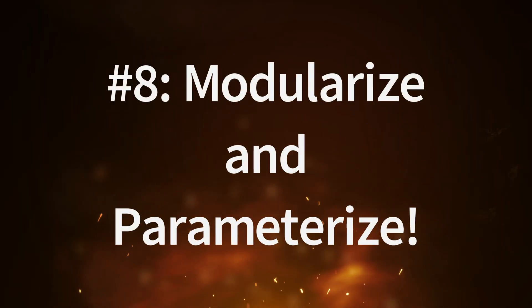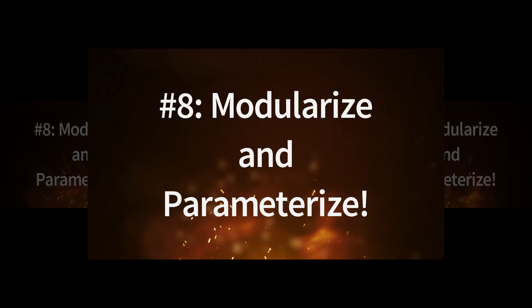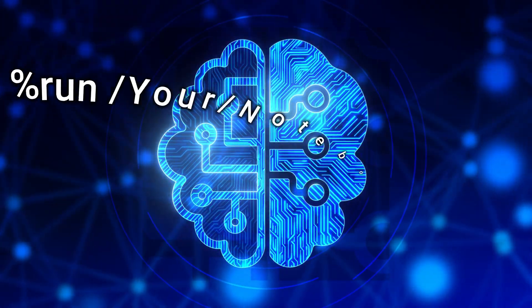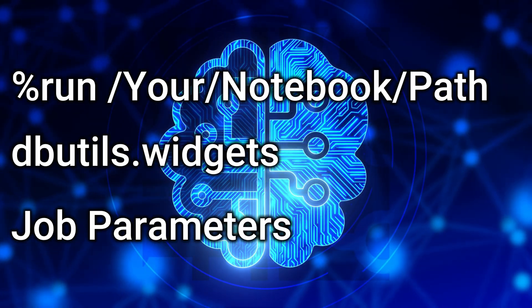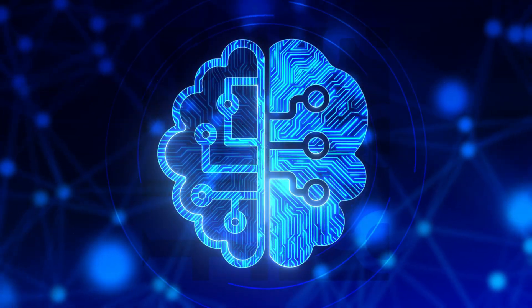Modularize and parameterize for your sanity and maintainability. You ran cells out of order? Now your data looks like a Jackson Pollock painting. Reset your state. Modularize your logic and stop pretending the execution order doesn't matter, because it does. Databricks gives us magic in the form of %run, widgets, and job parameters for a reason. Stop pretending every notebook is standalone, because it's not.